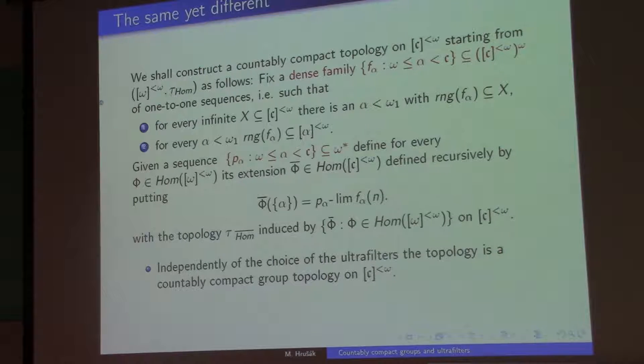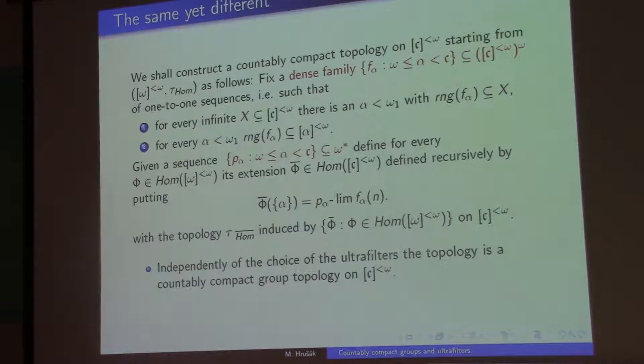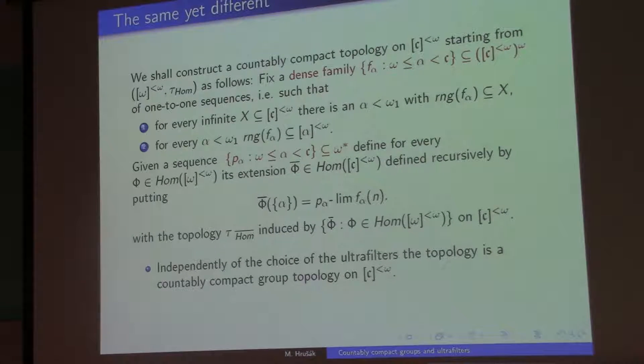We start with the same countable group topology given by the homeomorphisms of the countable abelian group. And of course, I can't take the ultrapowers, so I will have to tell you what the big group that I will be constructing is. Well, it's going to be the group of finite subsets of continuum.